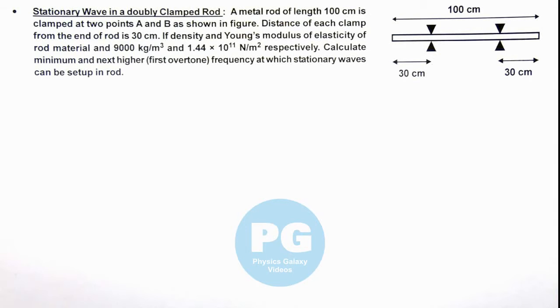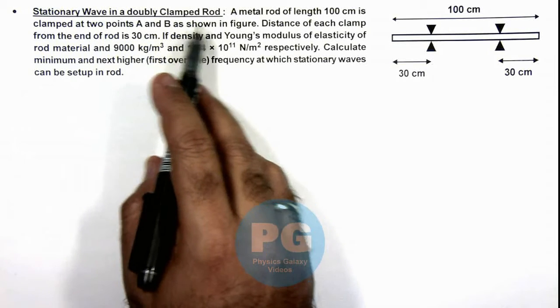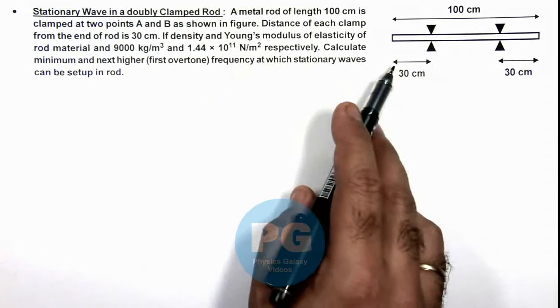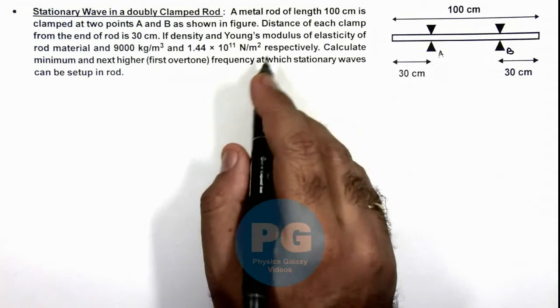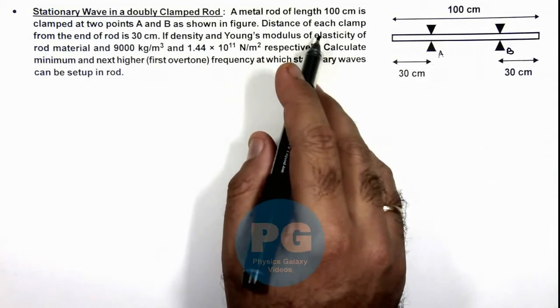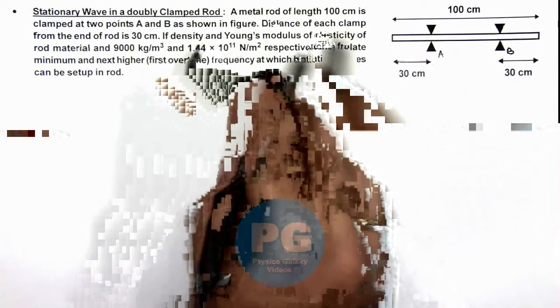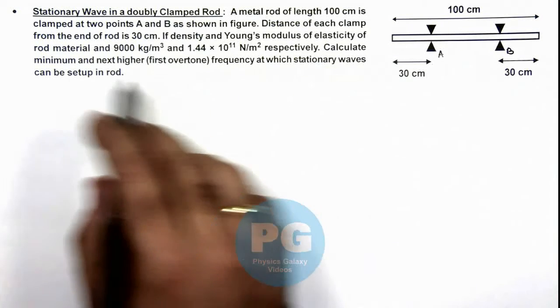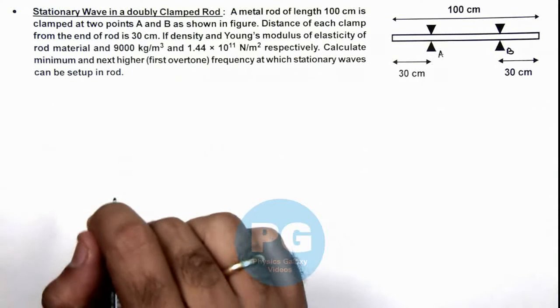In this illustration we'll analyze a stationary wave in a doubly clamped rod. Here we are given that a metal rod of length 100 centimeter is clamped at 2 points A and B, as we can see here in the figure. Distance of each clamp from the end of rod is 30 centimeter, and density and Young's modulus are also given to us. We are required to calculate the minimum and next higher frequency at which stationary waves can be set up in the rod.